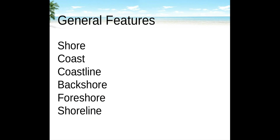The shore is the zone that lies between the low tide and the highest area on land affected by storm waves. The coast extends inland as far as ocean-related features are found. The coastline is the boundary between the shore and the coast. The backshore is the part of the shore above the high tide shoreline. The foreshore is part of the shore exposed at low tide and submerged at high tide. The shoreline is the water's edge that migrates with the tide.